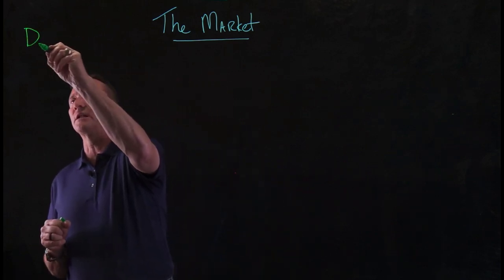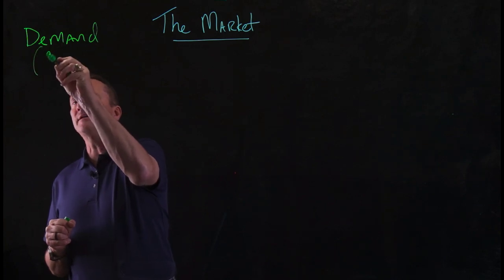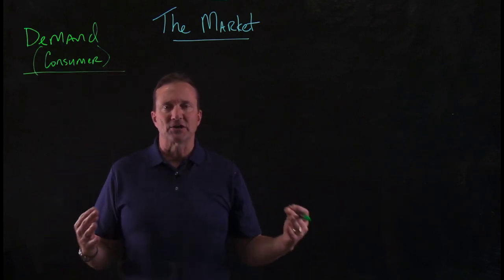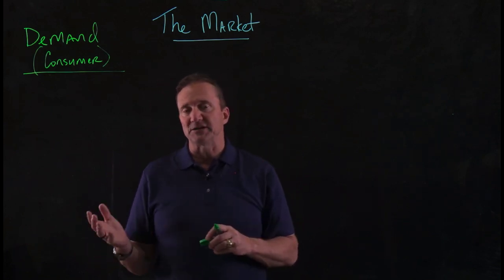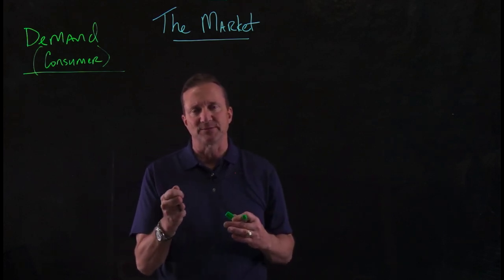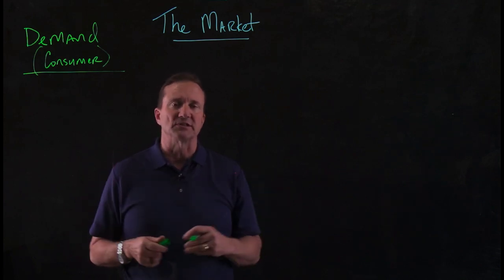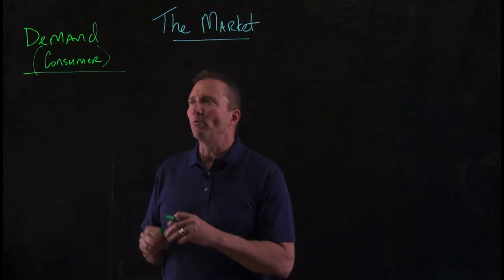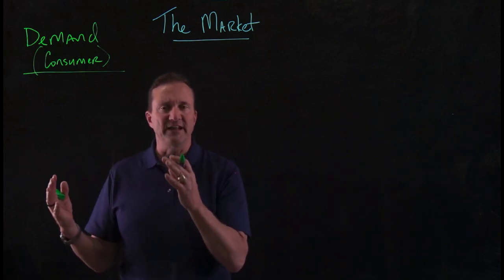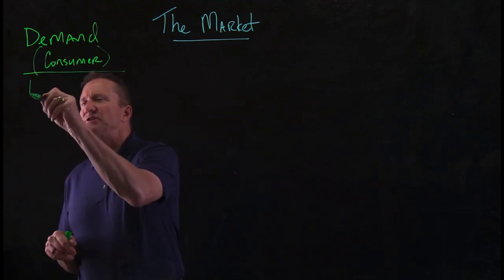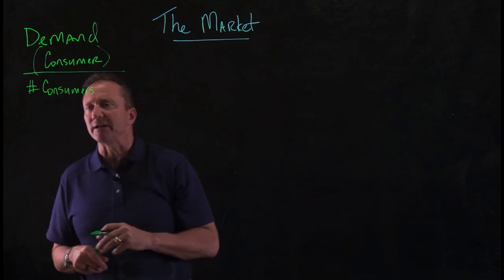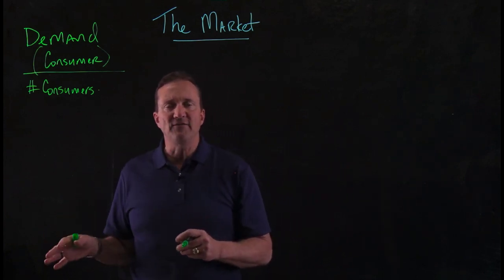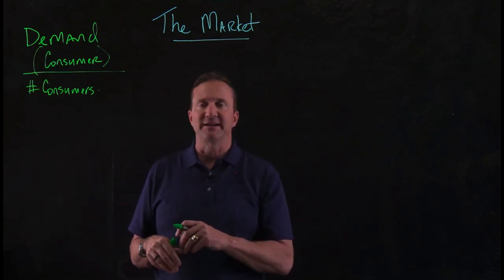The first part of a market I'm going to label as demand. Demand is really wherever you have what we call a consumer. A consumer is the participant in the market that consumes the product — or whatever's in the market. It could be a service, by the way. Not all businesses produce products that you can tangibly touch. Some are services like online subscriptions or consulting services. So demand is anywhere a participant is consuming a product or service.